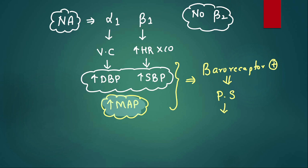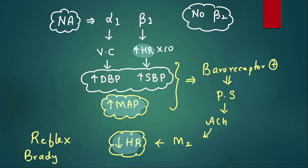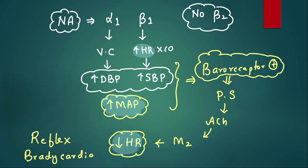Baroreceptors get activated, parasympathetic gets activated, which activates the vagus nerve. The vagus is parasympathetic so it releases acetylcholine, which acts on M2 receptors in the heart and decreases heart rate. So when we infuse noradrenaline, initially you see an increase in heart rate, but later you see a decrease in heart rate. This is called the baroreceptor reflex — or reflex bradycardia. The patient will have reflex bradycardia when noradrenaline is infused.